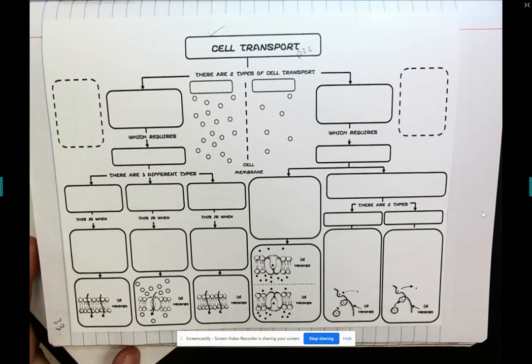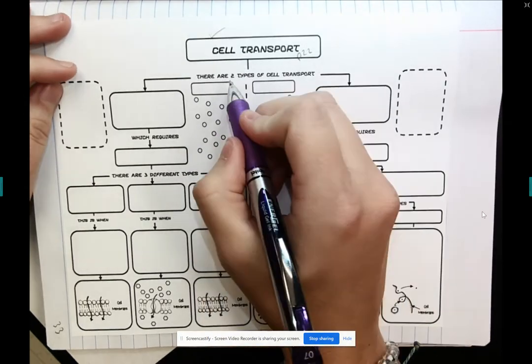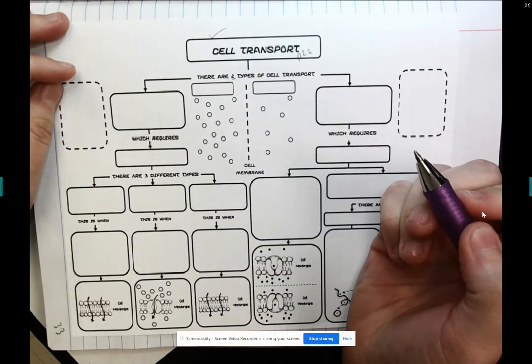Hey there, I'm going to go over our cell transport graphic organizer. So when we're talking about cell transport, we know that there are two types of cell transport.